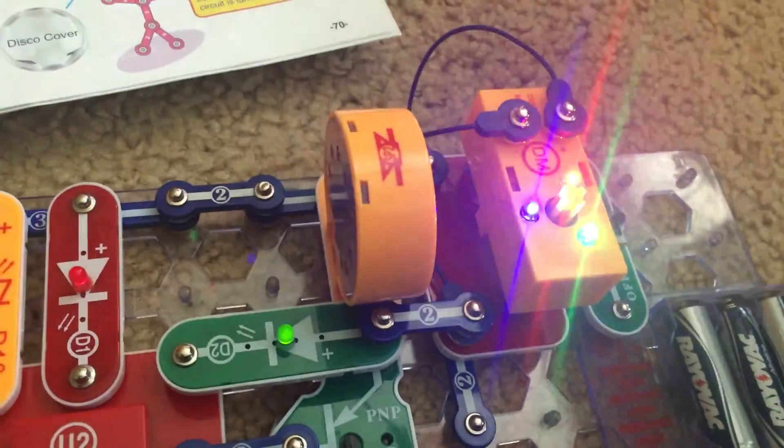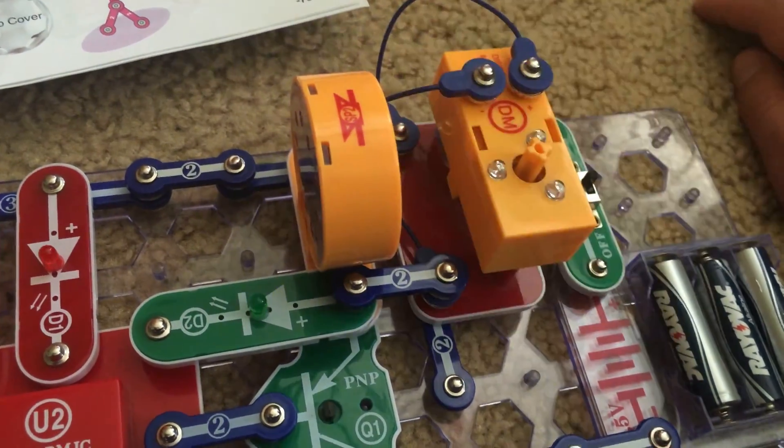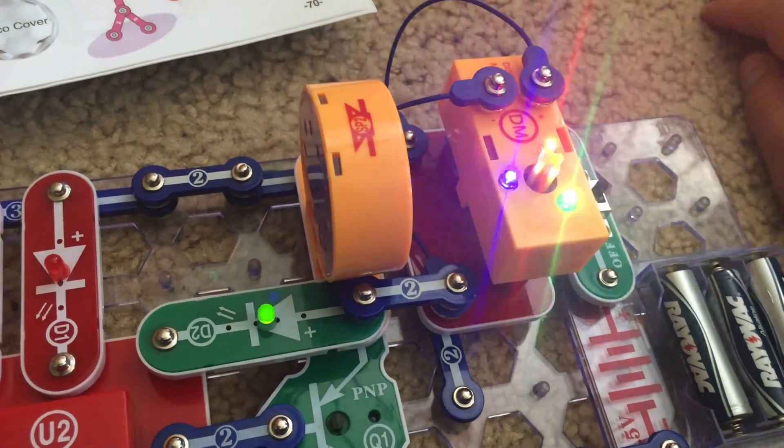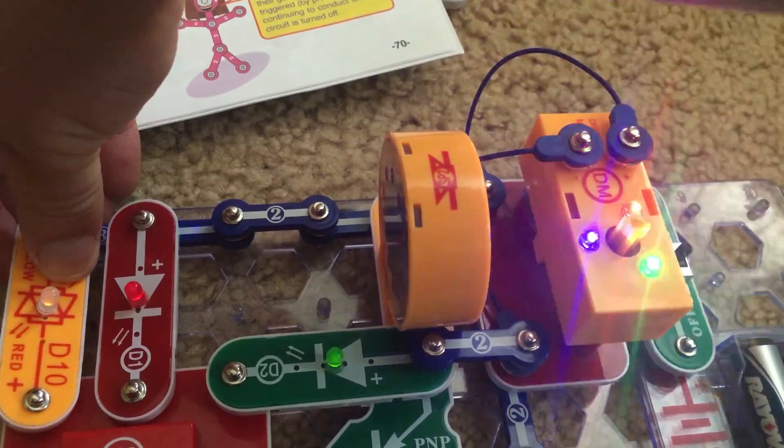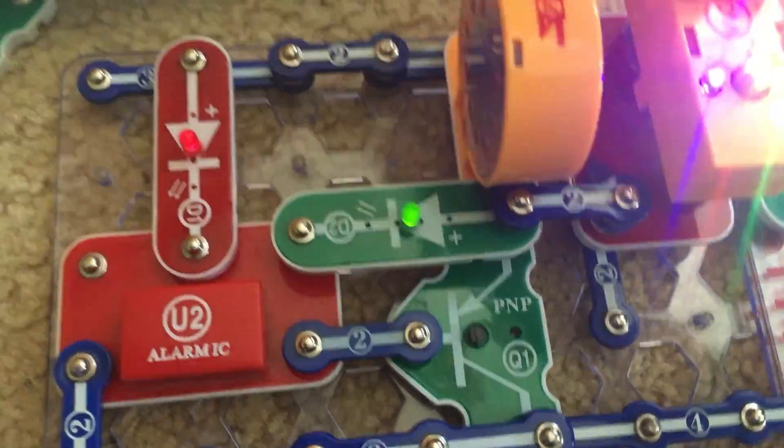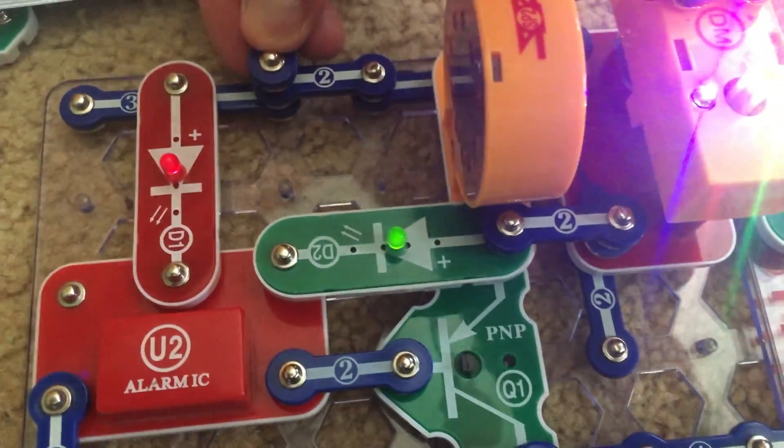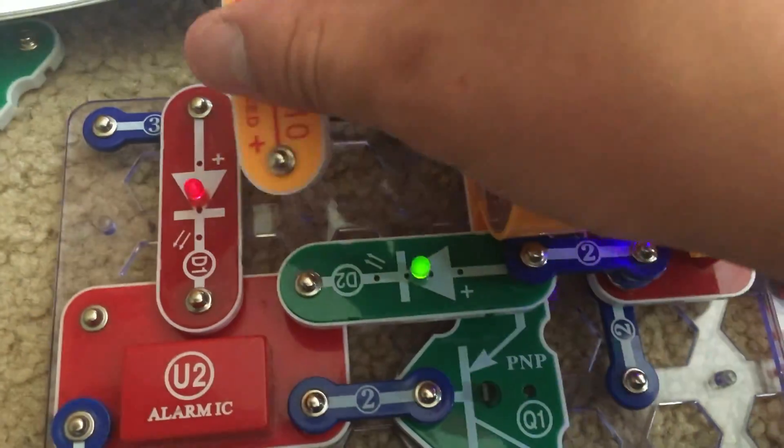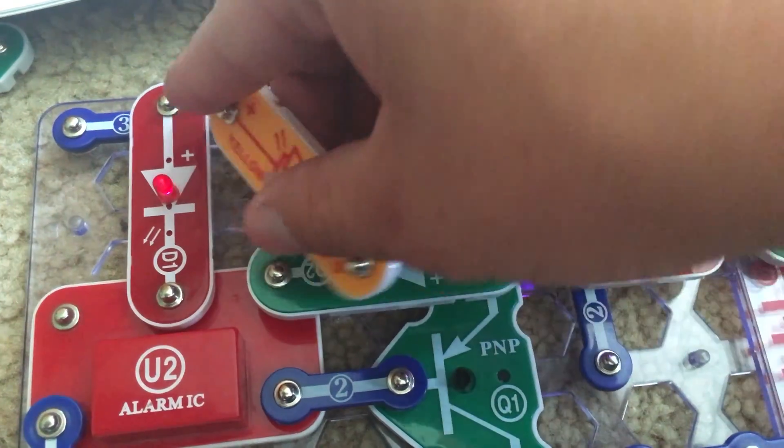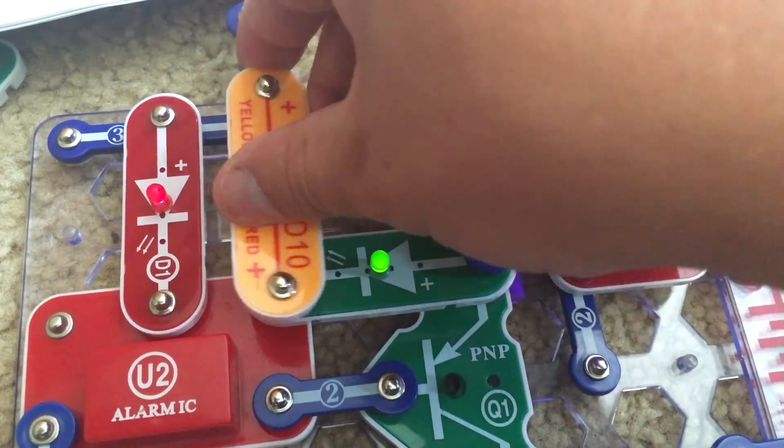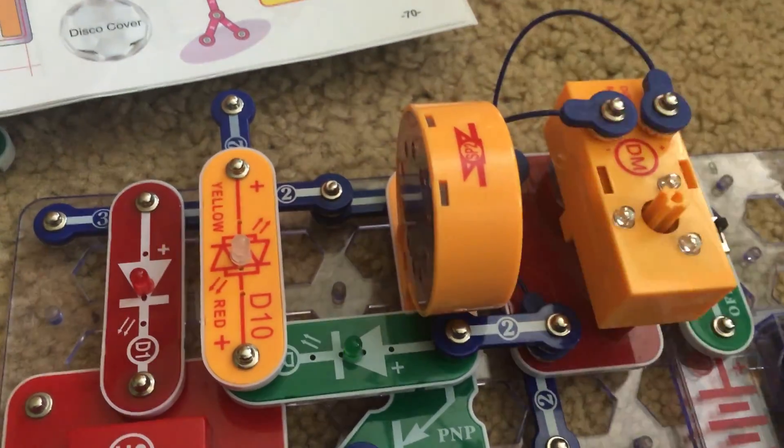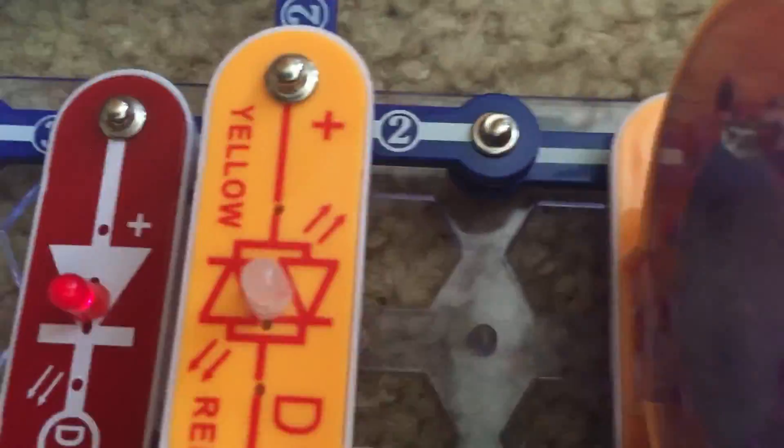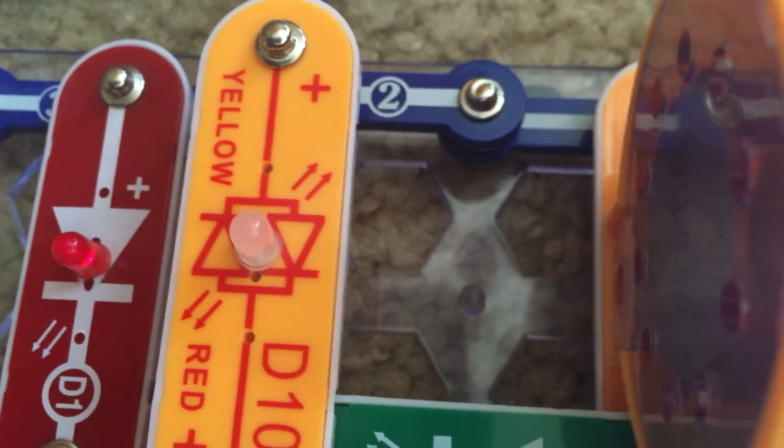And then for weird sound three, you're going to move the bicolor LED and place it across points C and D right here. We will use this extra two snap wire for support and place it in either direction. Now the intervals are shorter. Now the red LED is on, not the yellow one.